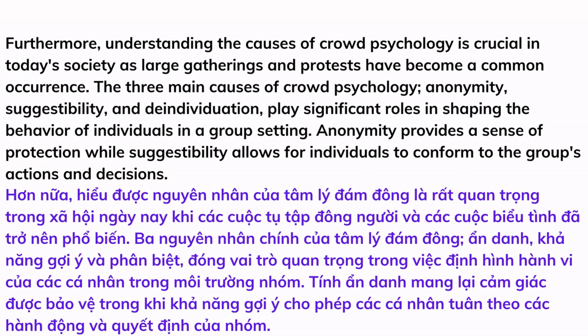Furthermore, understanding the causes of crowd psychology is crucial in today's society, as large gatherings and protests have become a common occurrence. The three main causes of crowd psychology — anonymity, suggestibility, and deindividuation — play significant roles in shaping the behavior of individuals in a group setting. Anonymity provides a sense of protection, while suggestibility allows individuals to conform to the group's actions and decisions.